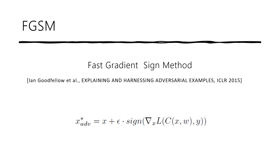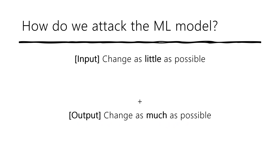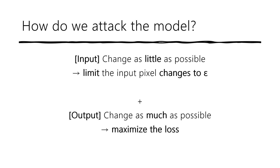You don't have to understand what this equation means yet — I'll explain it in a very easy way. How do we attack the ML model? We want to change the input as little as possible so that people wouldn't notice the change. Plus, we want to change the output of the model as much as possible so that the category changes. To change the input as little as possible, we limit pixel changes to a very small number epsilon. And to change the output as much as possible, we maximize the loss with respect to the original output.